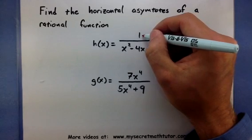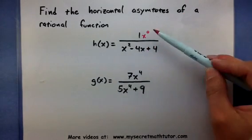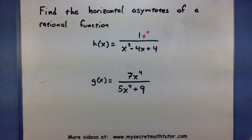We could imagine this as, say, x to the zero. So, the power in the top is zero, the power in the bottom is two. So, the top is smaller than the bottom.